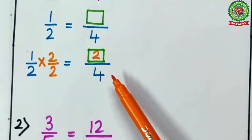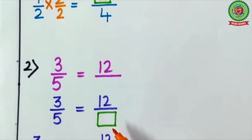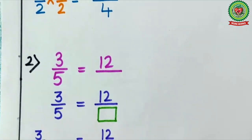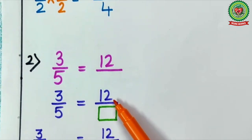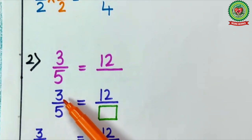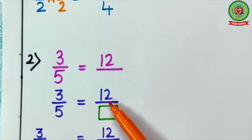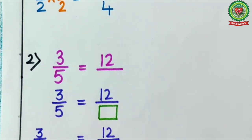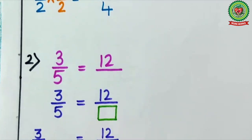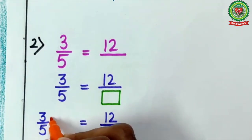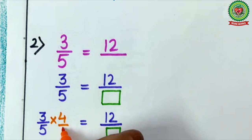In the previous question the numerator was missing; now the denominator is missing. So how do we find the denominator? In the same way, we will look at the box side. The numerator there is 12, and on the left side the numerator is 3. That means 12 is bigger than 3, so we have to multiply 3 by some number to get 12. That number is 4. So we will multiply both numerator and denominator by 4.